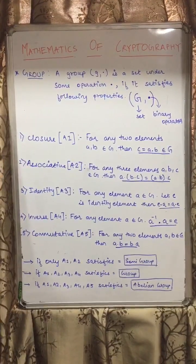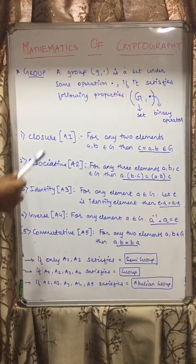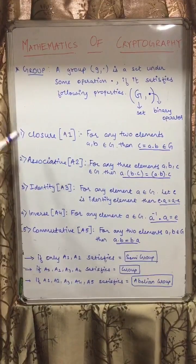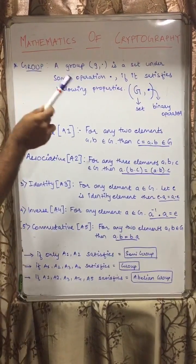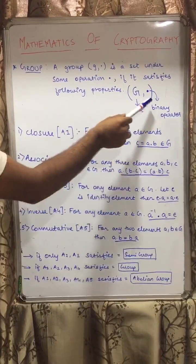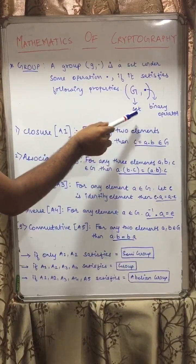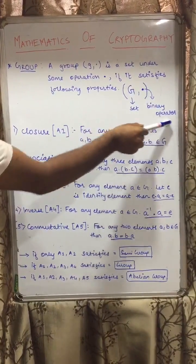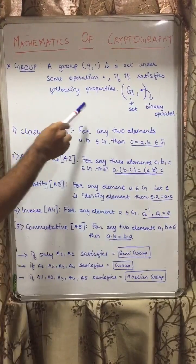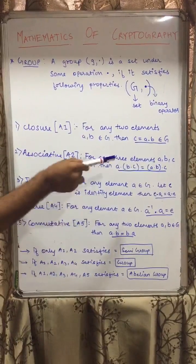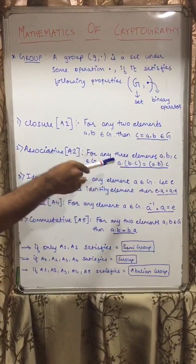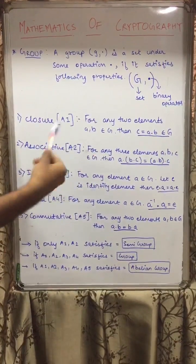A group is a set under some operation if it satisfies the following properties. We have mentioned five properties over here and it is denoted as (G, ·) where G is any set and this dot is any binary operator. While I am explaining any of these properties, this dot is the operator and I will be speaking it as dot for convenience.